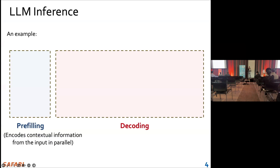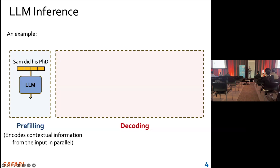In the prefill stage, the LLM processes all the information from the input request in parallel. Here is an example: we have four input tokens — 'Sam did his PhD' — and we encode all the information by the LLM to generate the first output token, 'AT'.